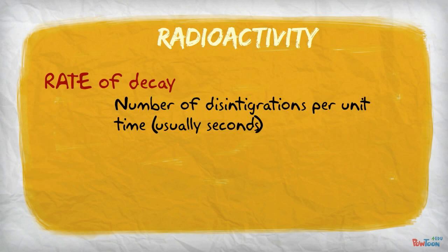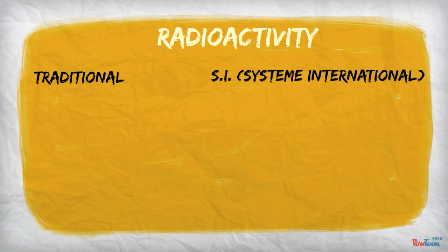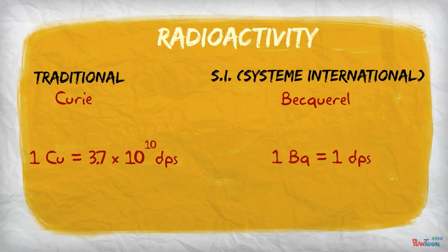First is radioactivity. You already know this is the rate of decay, or number of disintegrations per unit of time, usually seconds. For all our units, there is the traditional system and the SI system. The curie is the traditional unit, and one curie equals 3.7 times 10 to the 10th disintegrations per second. The SI unit is becquerels, and one becquerel equals one disintegration per second. Further, one millicurie equals 37 megabecquerels.